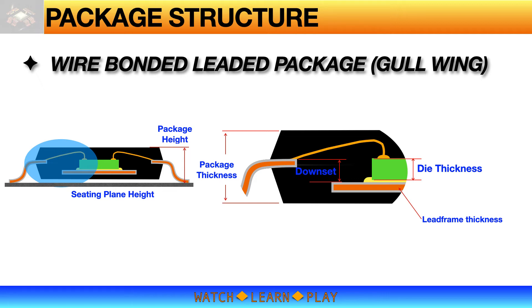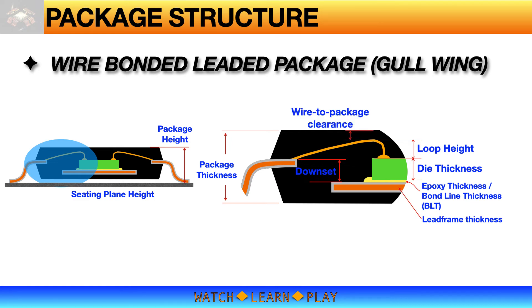Advanced packages require much thinner die. Bond line thickness, or BLT, is the thickness of the adhesive epoxy between the die and the die attach pad, typically at least 1 mil or 25 microns. Loop height of the wire is measured from the die surface to the top of the wire. You will notice that the wire is very close to the top of the package — in general, the wire-to-package clearance must be at least 2 mils or 50 microns, otherwise there is a risk of the wire being exposed after laser marking the package.